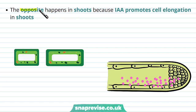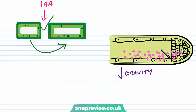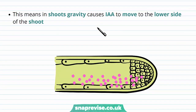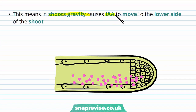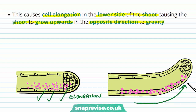The shoots have an opposite mechanism because in the shoots, IAA promotes cell elongation. So just like in phototropism, in the shoot tips IAA causes cell elongation. This means that when gravity pulls down, the auxin moves to the lower side of the shoot and we get more cell elongation on that side. The gravity pulls the IAA to the lower side of the shoot, and this time the IAA encourages elongation — so cell elongation happens on the lower side, and the shoot grows upwards in the opposite direction to gravity, pushed up away from gravity.